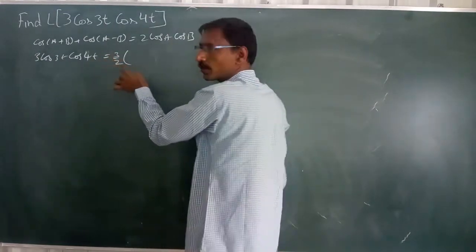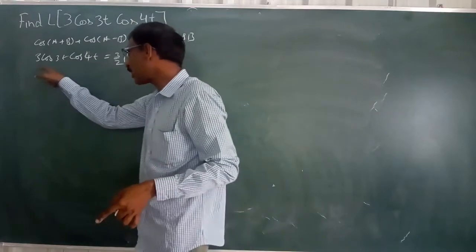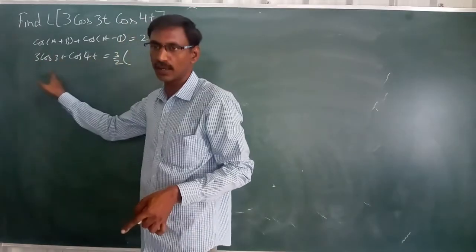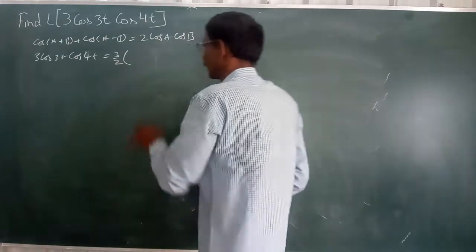Here we have, I take a 2 right. The reason I would like to multiply and divide with 2, then we get this one only again. Is it clear or not?